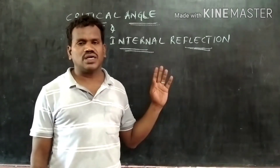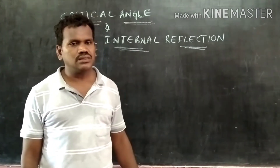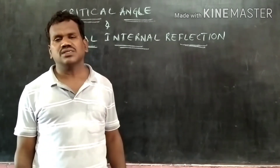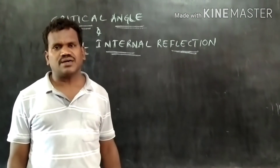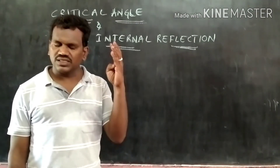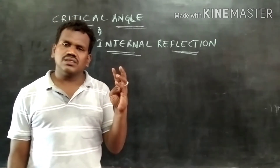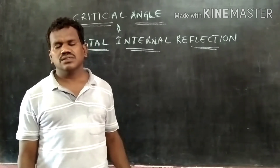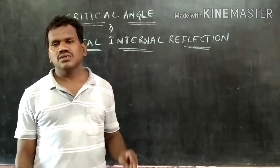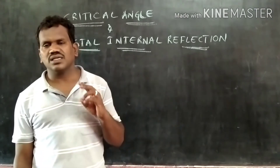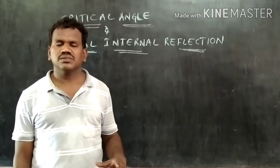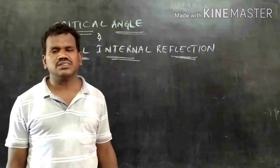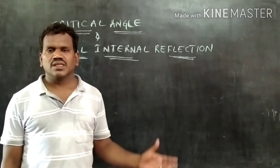For that purpose we are going to do an activity, and for that activity we are going to use the same apparatus we used in the case of Snell's law: that is a pro-circle, a semi-circular glass slab, a protractor, scale, pencil, white paper and the remaining things. We should draw the pro-circle and at the centre we should place the semi-circular glass slab.